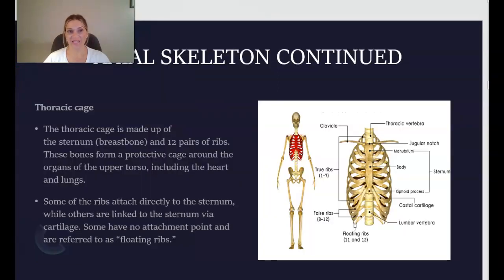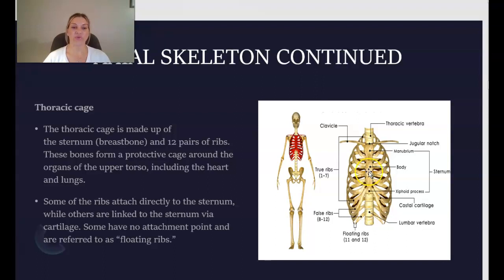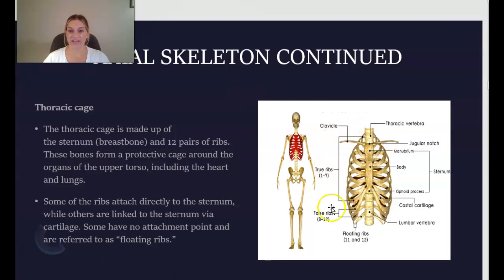Continuing with the axial skeleton, we have the thoracic cage or thoracic cavity. This is made up of the sternum — the breastbone, a hard flat bone that protects the heart — and 12 pairs of ribs. These bones form a protective cage around the organs of the upper torso, including the heart and lungs. Some ribs attach directly to the sternum, while others are linked to the sternum via cartilage. Some have no attachment point and are referred to as floating ribs.